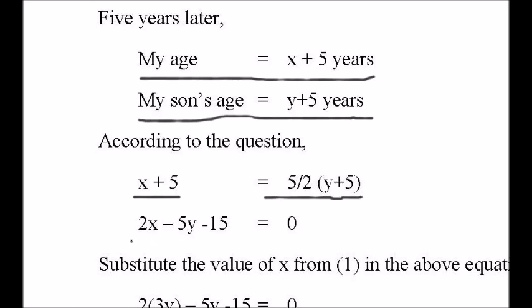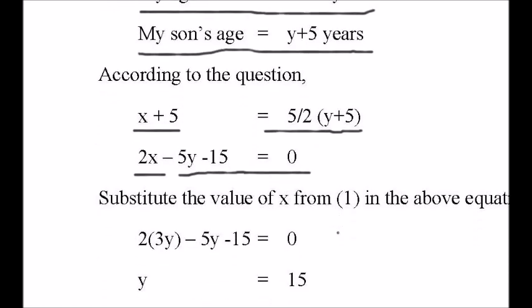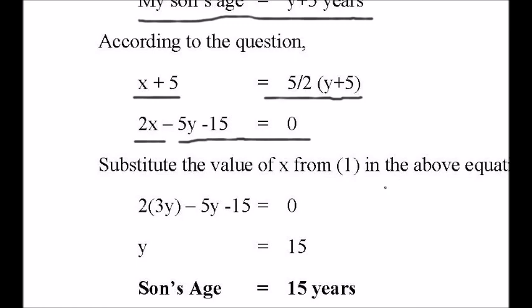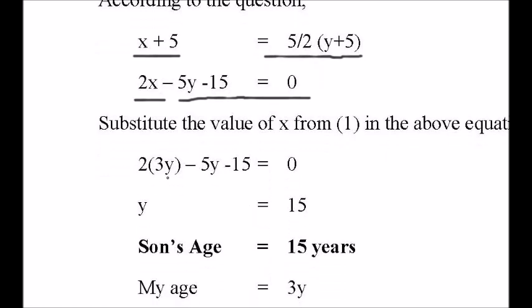That is, 2X minus 5Y equals 15. Substitute the value of X from equation 1 in the above equation: 2 times 3Y minus 5Y minus 15 equals 0. Solving this, we get Y equals 15. That's the son's age, 15 years.